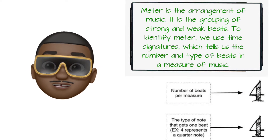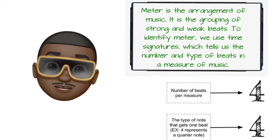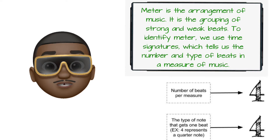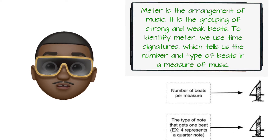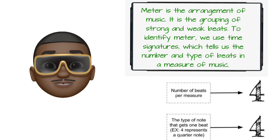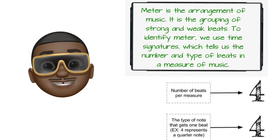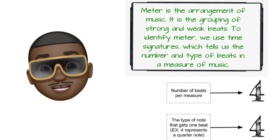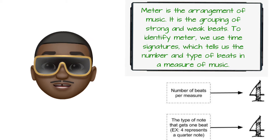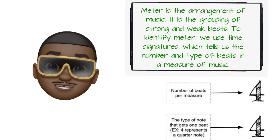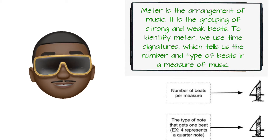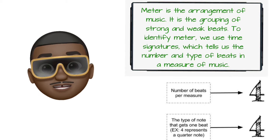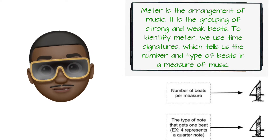Meter is the arrangement of music. It is the grouping of strong and weak beats. To identify meter we use time signatures, which tells us the number and types of beats in a measure of music.